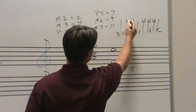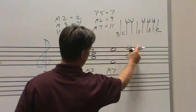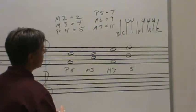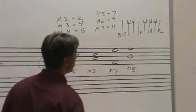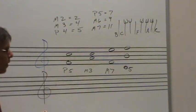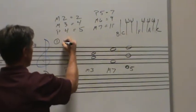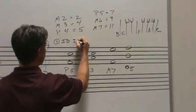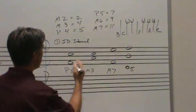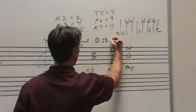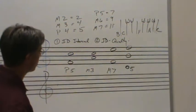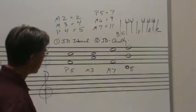Now, if we count those half steps, one, two, three, four, five, six half steps from B to F, and a perfect fifth is seven, so that must be a diminished fifth. You get the idea there. The order of operations here is to first identify the interval, fourth, fifth, sixth, third, et cetera. And then second, identify the quality of the interval, major, minor, diminished, perfect, augmented. That gets us that far.